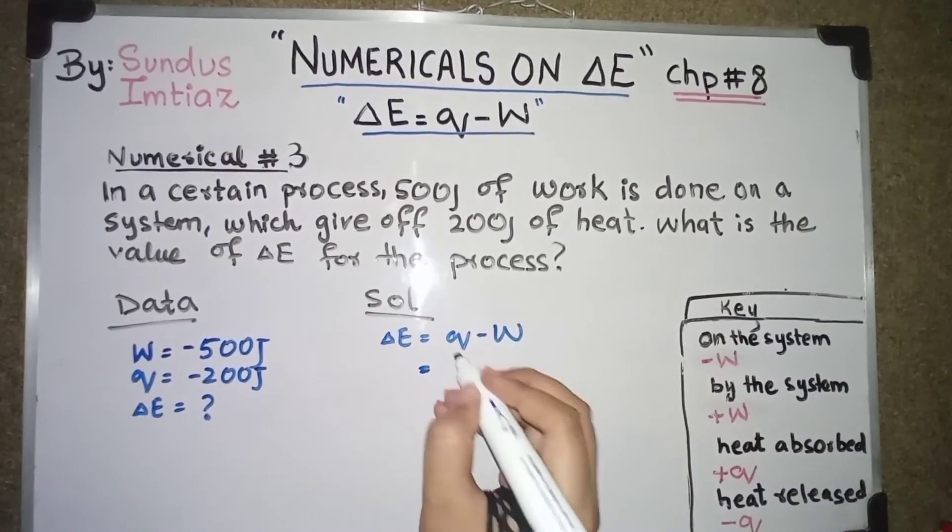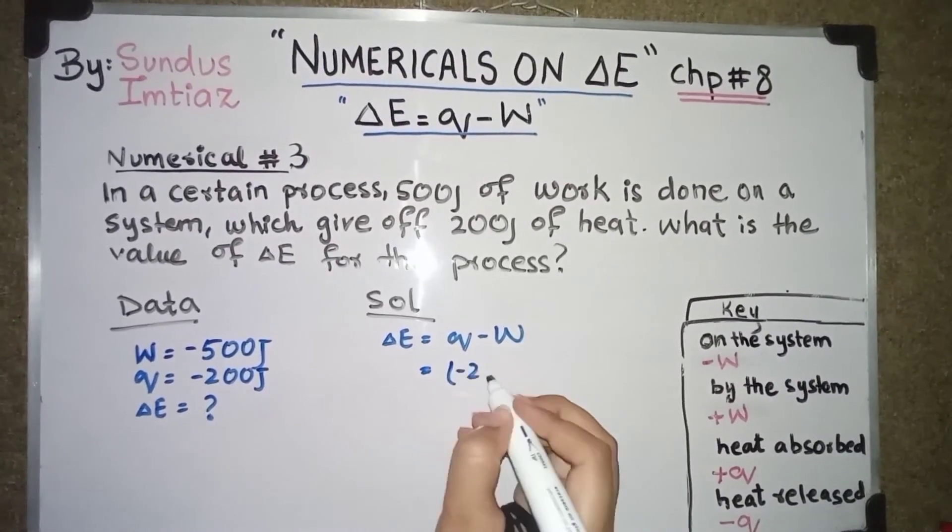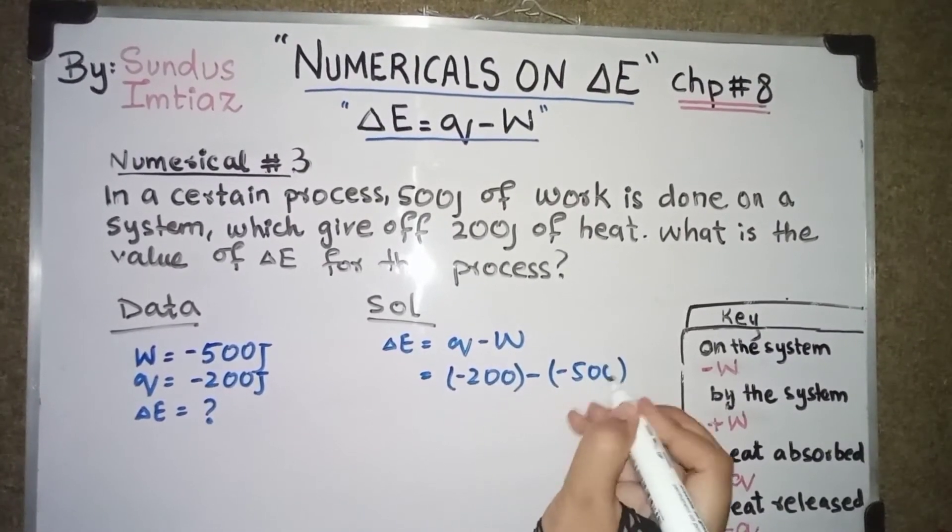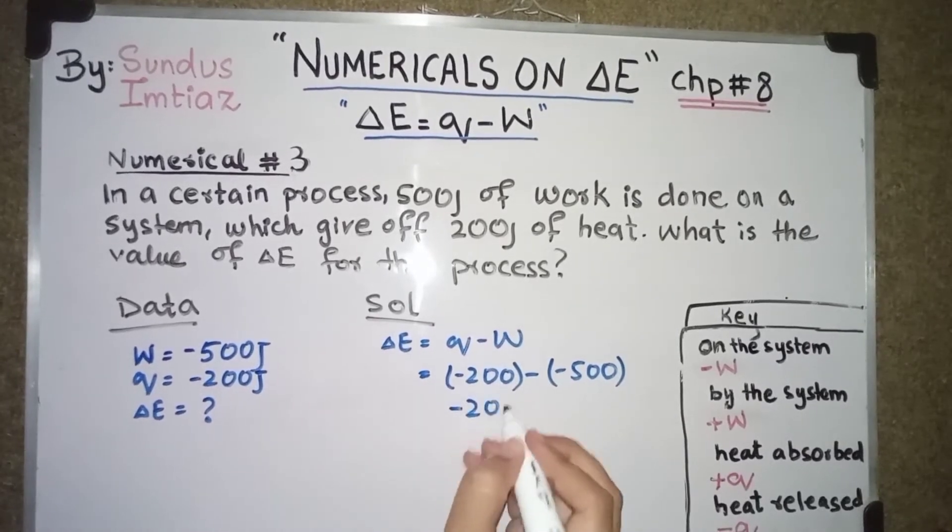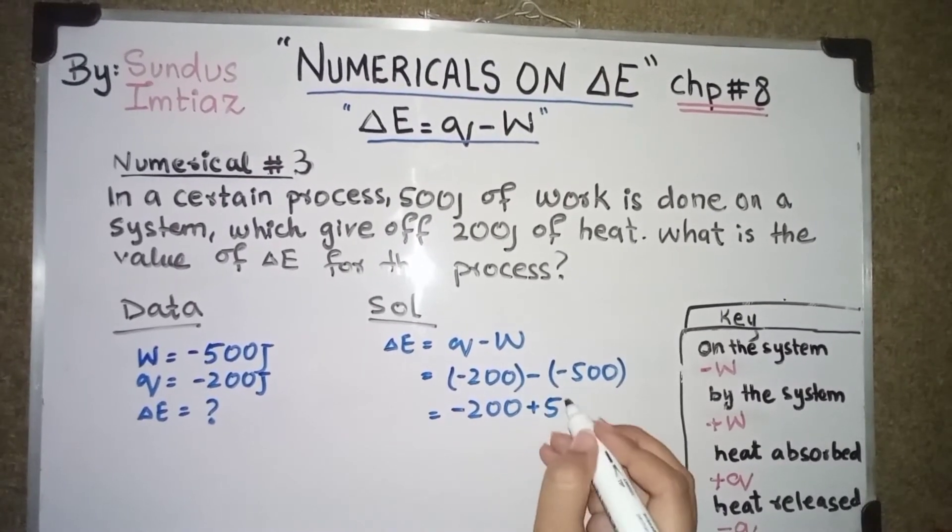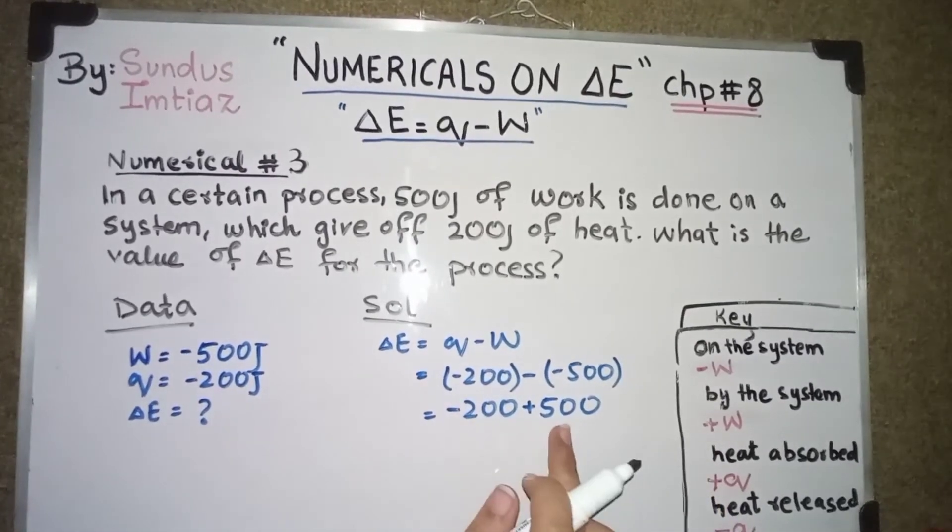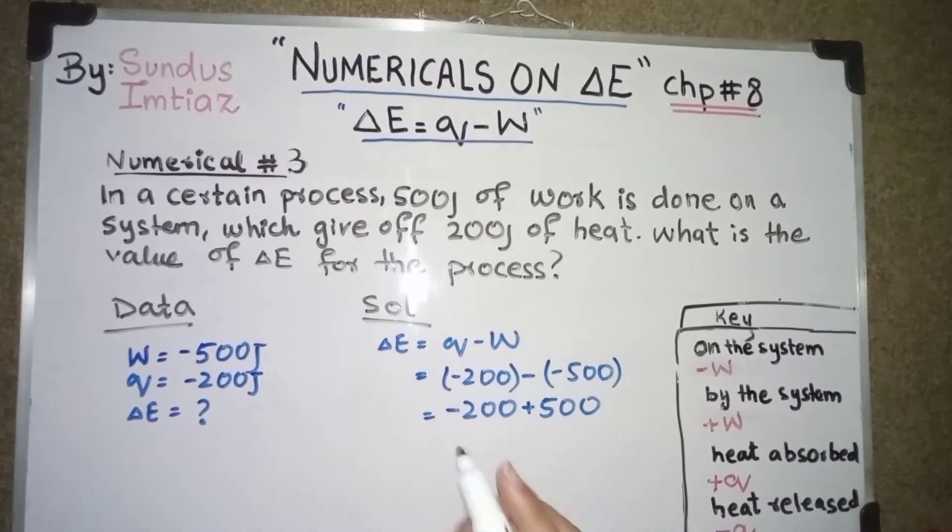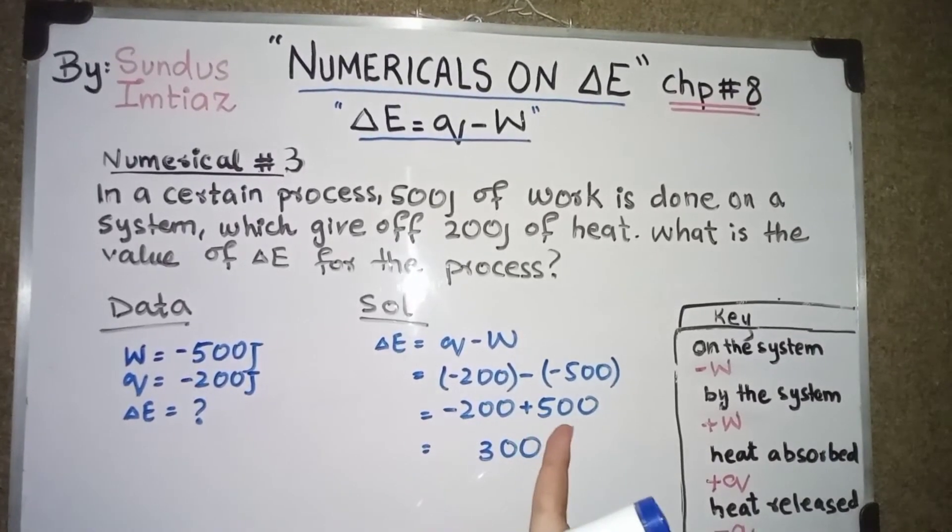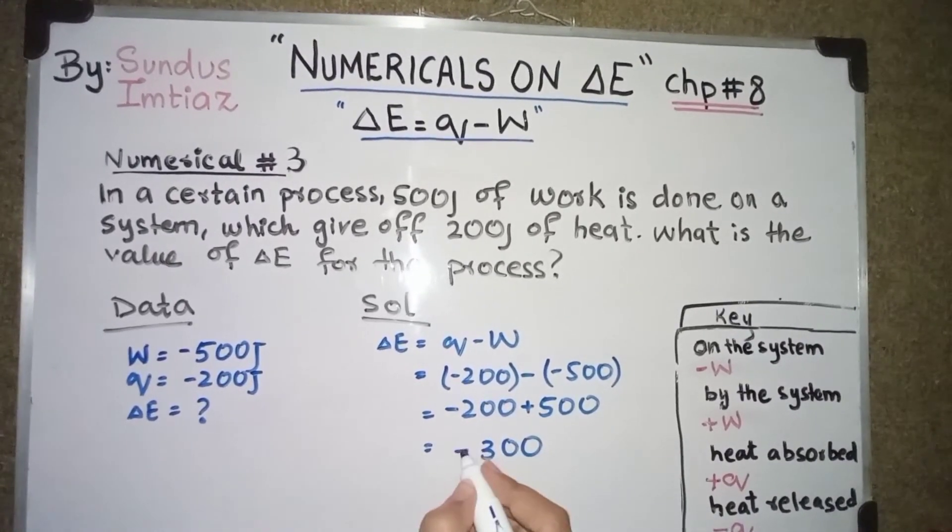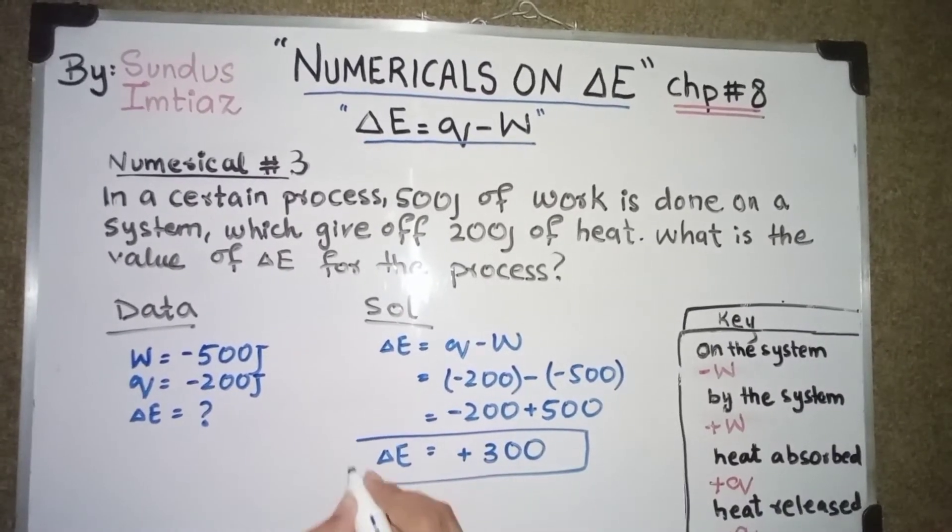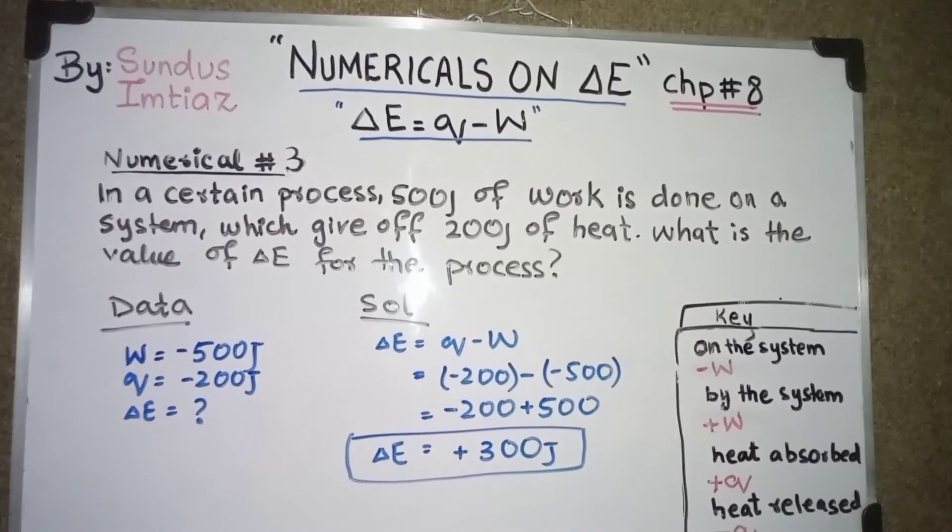And internal energy is equal to question mark. Now this formula. Again ΔE equals Q minus W. The Q is minus 200, work done is minus 500. So minus 200 minus minus is plus 500. 500 after subtracting with 200 would be 300. And the greater number has positive sign. So it will be positive. The internal energy equals 300 Joules.